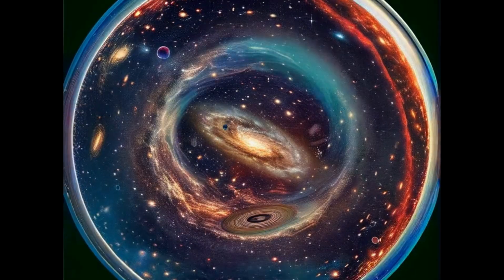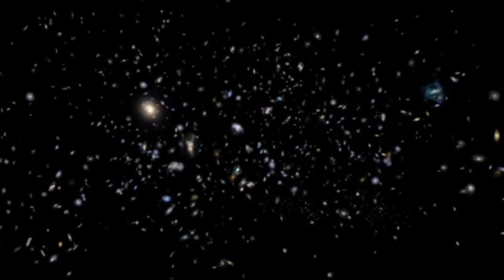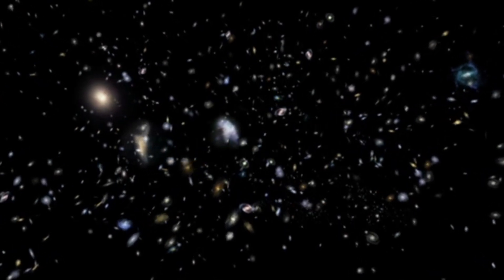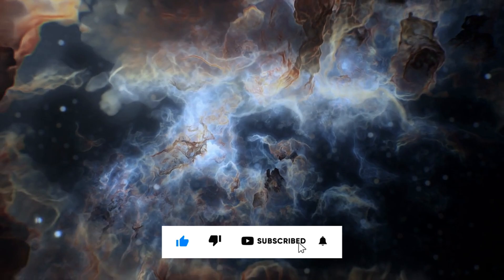According to the generally accepted cosmological principle, the universe, on large scales, is homogeneous and isotropic, meaning that wherever you look, the distribution of matter should be roughly the same.